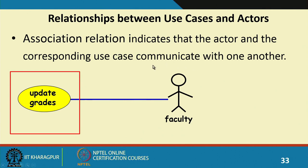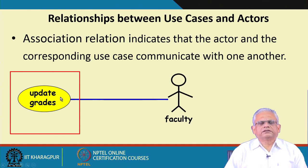The use case model expresses the user's requirements and based on this model the other models are developed by refining it. In the last lecture we were discussing how a use case is represented, how users are represented, and the communicates relation between users. The line drawn between the use case and the actor is called the communicates relation — it is an association relation between the use case and the actor, and it indicates that they communicate with each other.